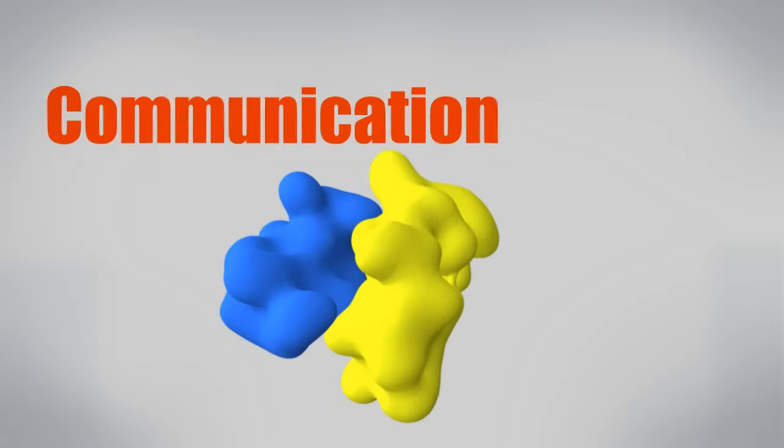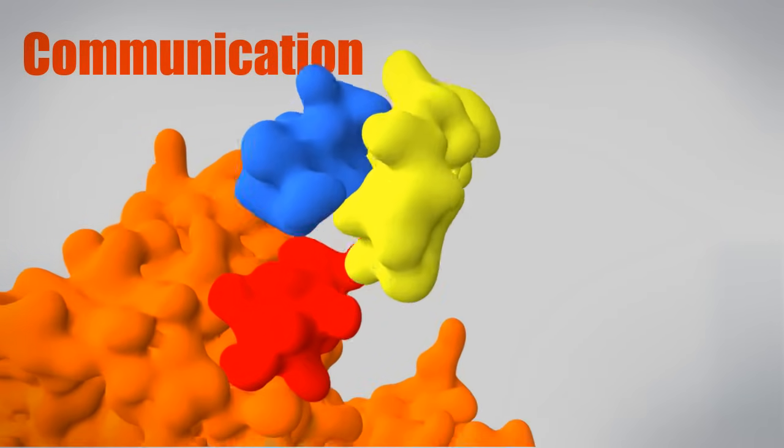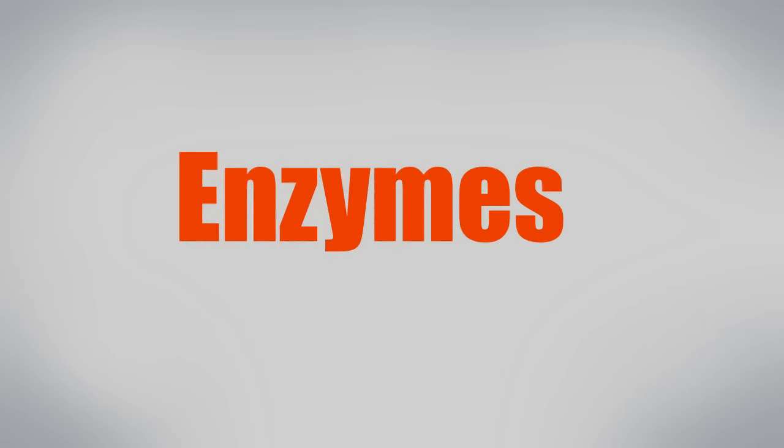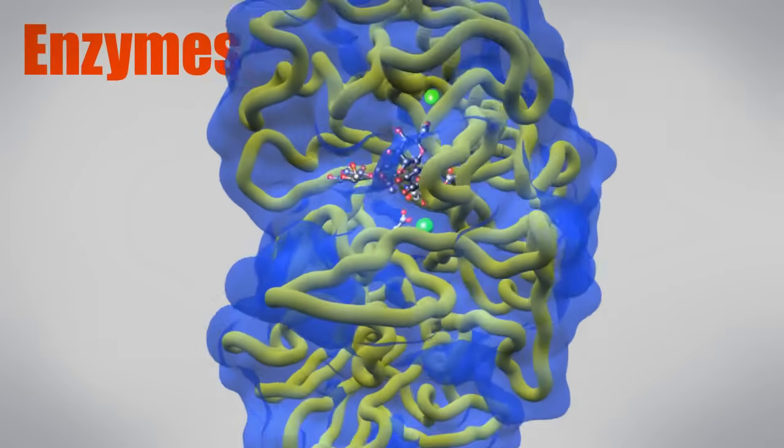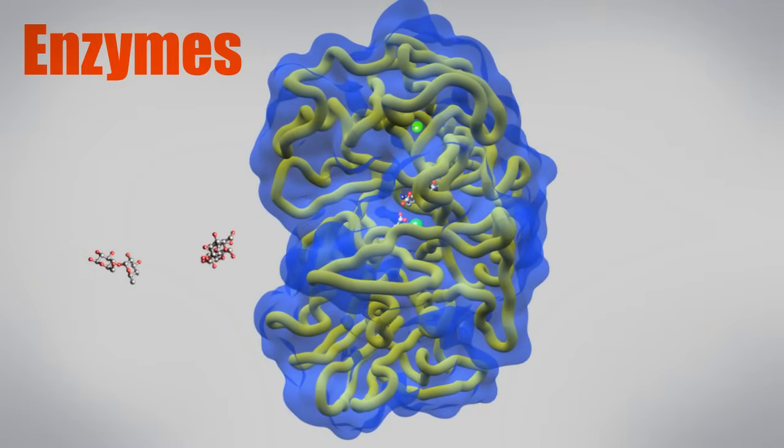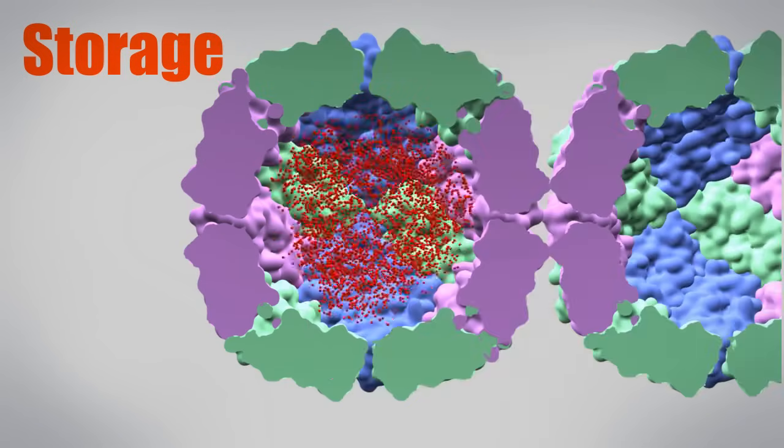The hormone insulin is a small stable protein that can easily maintain its shape while traveling through the blood to regulate blood sugar levels. Alpha amylase is an enzyme with a catalytic site that begins the breakdown of carbohydrates in our saliva. Ferritin forms a hollow shell that stores iron from our food.